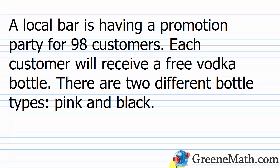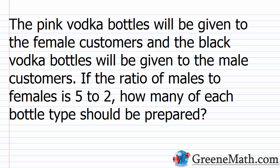Let's look at an application problem. A local bar is having a promotion party for 98 customers. Each customer will receive a free vodka bottle — pink bottles for female customers and black bottles for male customers. If the ratio of males to females is five to two, how many of each bottle type should be prepared? How do we solve this without algebra, using just plain math?